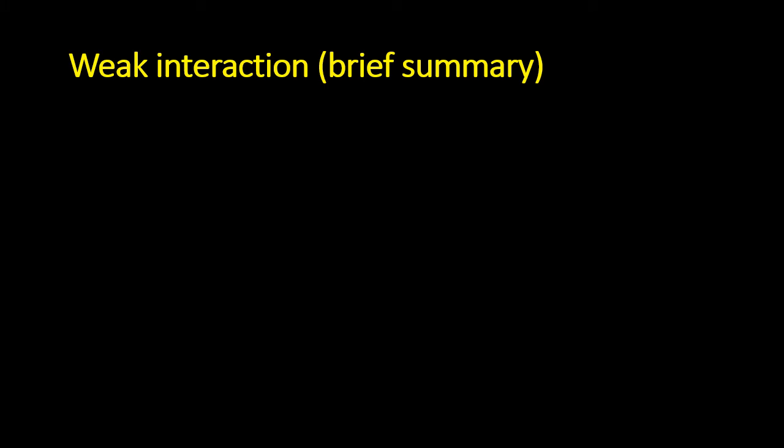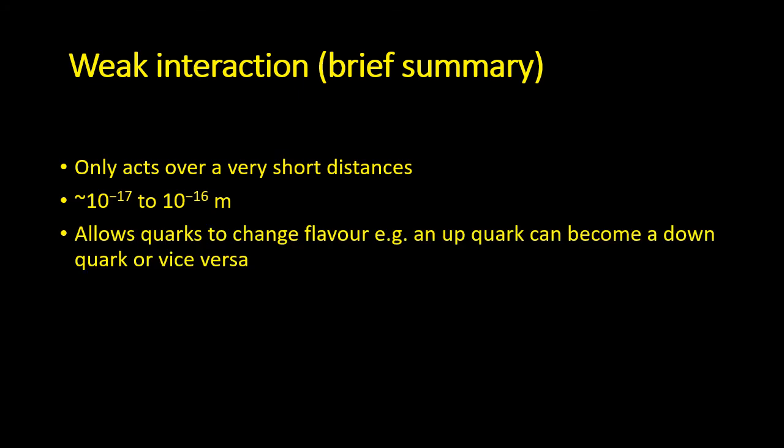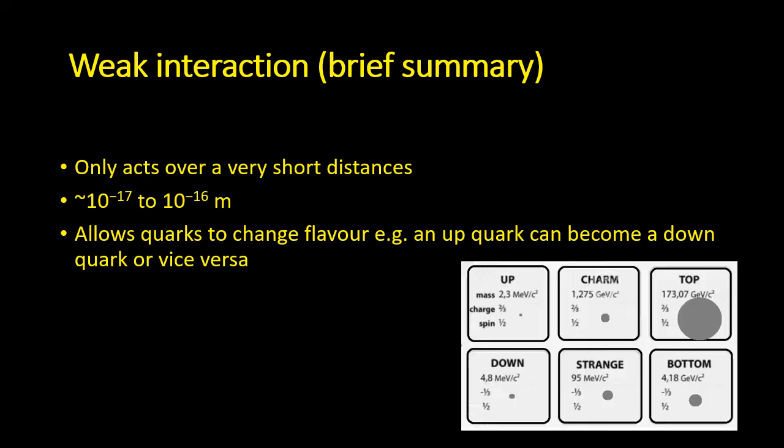I'll now give a brief summary of the weak interaction. It acts over very short distances, so 10 to the minus 17 to 10 to the minus 16 meters, extremely short distance. One of the things it does, it allows quarks to change flavour, so an up quark can become a down quark, or vice versa. The weak interaction, as a result, is responsible for beta decay.